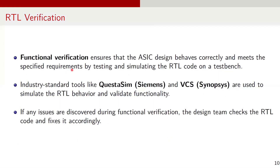Once the RTL is implemented, it is verified. Functional verification ensures that the ESIC design behaves correctly and meets the specified requirements by testing and simulating the RTL code on a test bench. This stage is crucial for identifying and fixing design flaws before synthesis. Industry standard tools, for example, Questa SIM and VCS from Synopsys, are used to simulate the RTL behavior, validate logic functionality, and ensure compliance with the design specifications. If any issues are discovered during functional verification, the design team will return to the RTL code and fix it accordingly.